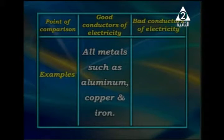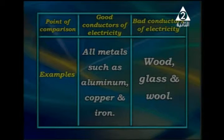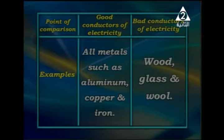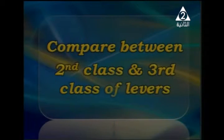For examples: good conductors include all metals such as aluminum, copper, and iron. Bad conductors include wood, glass, and wool. Wood, glass, and wool are bad conductors because they have no charges to move inside, so they do not allow electric energy to pass through.